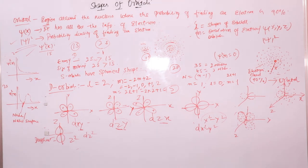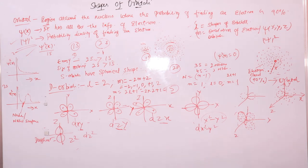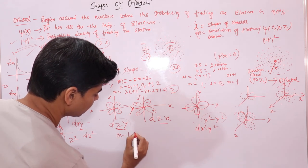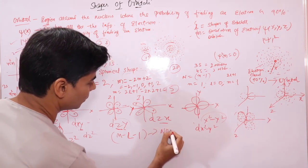To summarize these orbital shapes: five D orbitals exist, and only dz² has a donut-shaped electron cloud while the other four have clover leaf shapes. The number of nodes for D orbitals is given by n – l – 1.